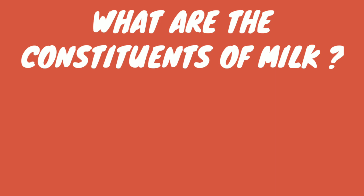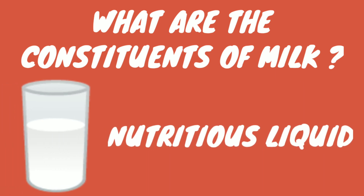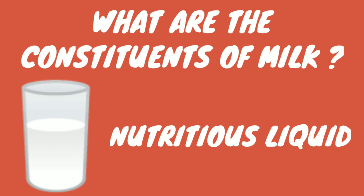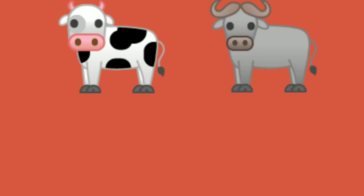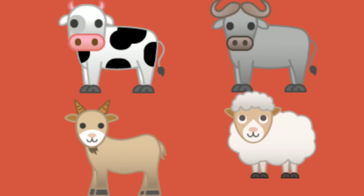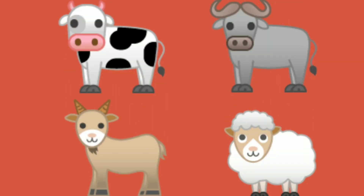In this video we will see constituents of milk. Milk is a white nutritious liquid produced by female mammals as food for their young ones. Cow, buffalo, goat and sheep are the main milk-producing animals. In some European countries, milk from reindeer is also used.